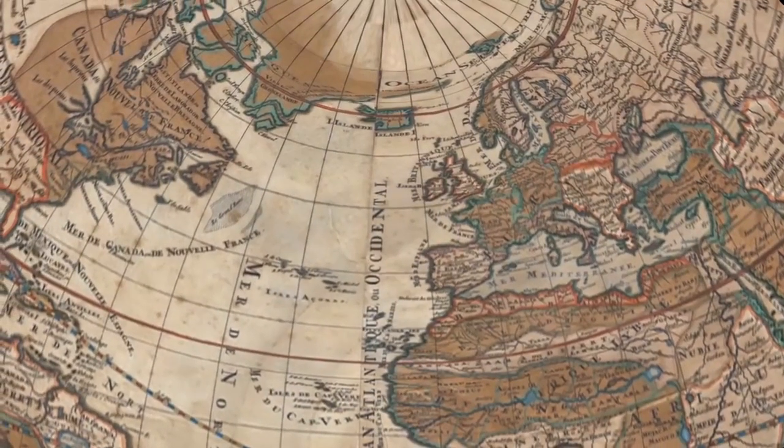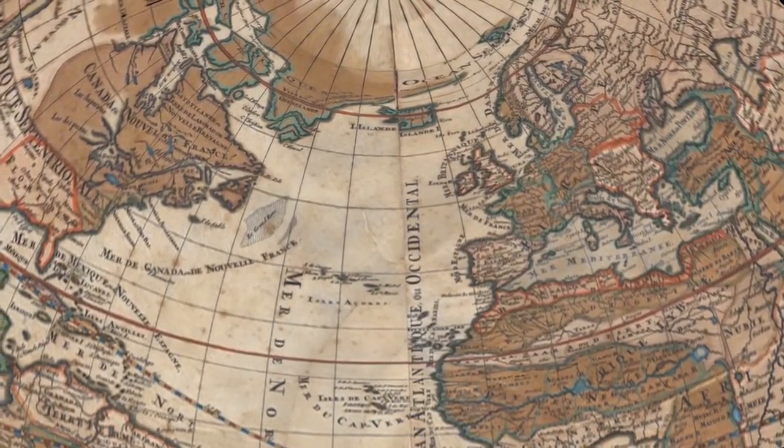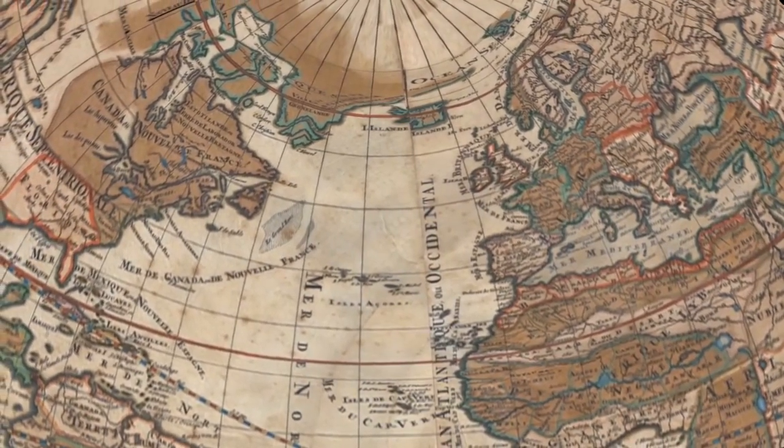Earth's uncharted lands became places on a map. Its coastlines defined a world far larger than early sailors had imagined.